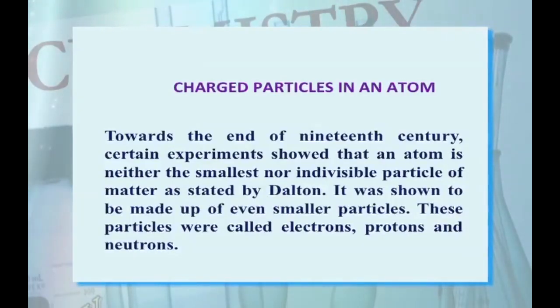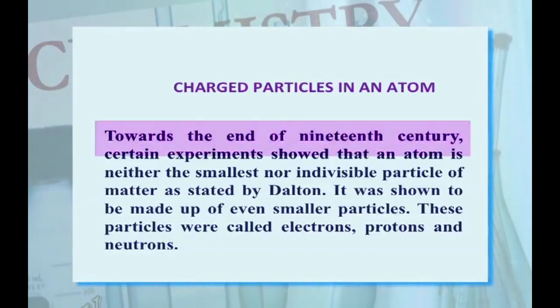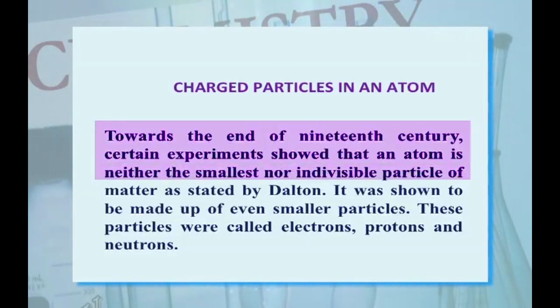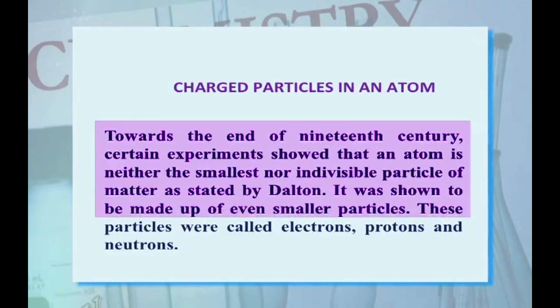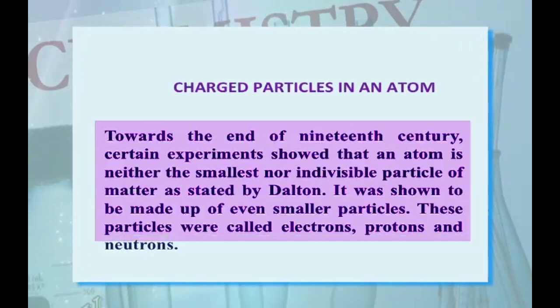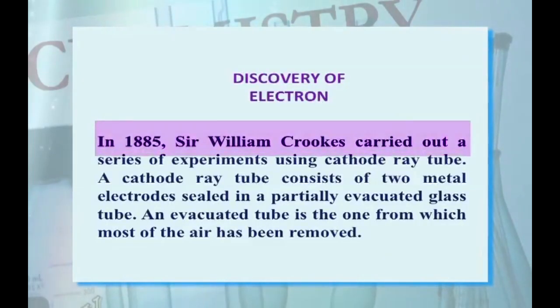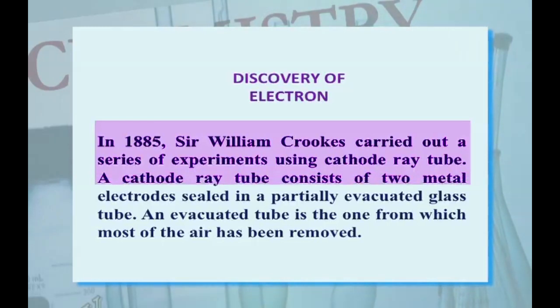Charged particles in an atom. Towards the end of the 19th century, certain experiments showed that an atom is neither the smallest nor the indivisible particle of matter as stated by Dalton. It was shown to contain even smaller particles. These particles were called electrons, protons, and neutrons.